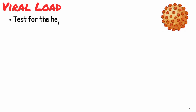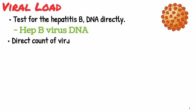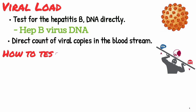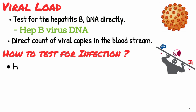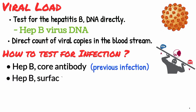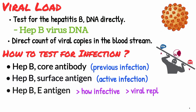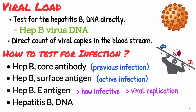There is a definitive test for the viral load of hepatitis B — testing for the hepatitis B DNA directly, abbreviated as HBV DNA. This gives you a direct count of the number of viral copies in the bloodstream, often referred to as the viral load. When screening somebody you suspect may have hepatitis B, first test for the HBcAb for a previous infection, and the HBsAg for active infection. If these are positive, then test for the HBeAg to see how infected they are and how much viral replication is occurring, and then test for the hepatitis B DNA to look for the viral load and the number of viral copies in the bloodstream.